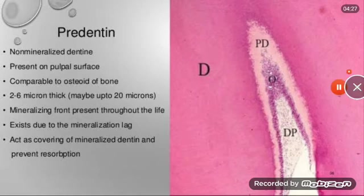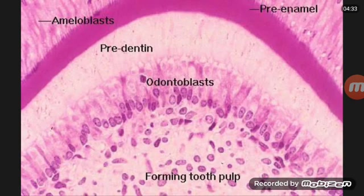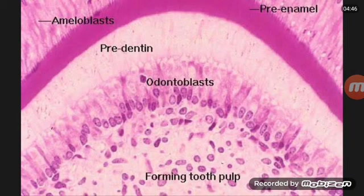Now we'll discuss about the odontoblast process. Here you can see the odontoblasts in the lower part forming the tooth pulp. Odontoblast processes are the cytoplasmic extensions of odontoblasts, which reside in the peripheral pulp.